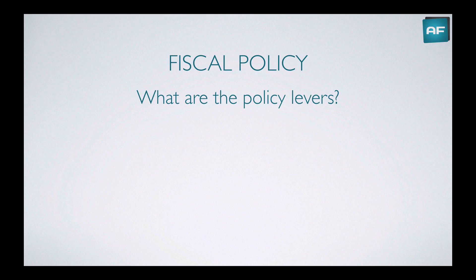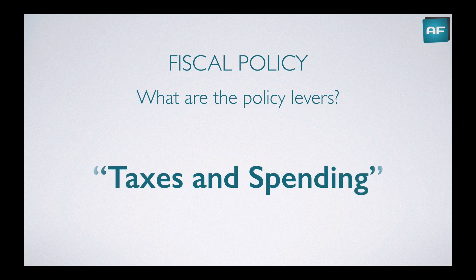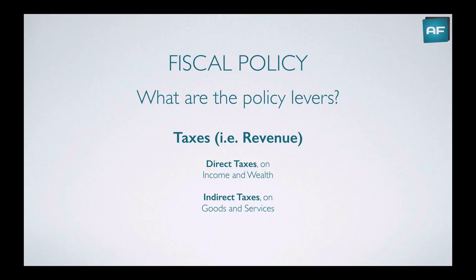So let's get into the policies. What are the policy levers for fiscal policy? Taxes and spending. When we talk about taxes, we're talking about revenue raised by the government. They can have direct taxes on income and wealth — income tax, company tax, death duties or inheritance taxes, or capital gains tax. There can also be indirect taxes on goods and services, such as VATs in Europe, or GSTs in Australia and India.